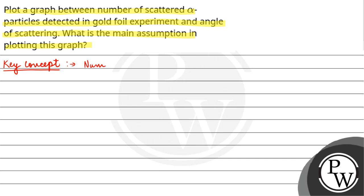Number of scattered particles, let's say N, that is inversely proportional to 1 upon sine raised to the power 4 theta by 2, where theta is the scattering angle.